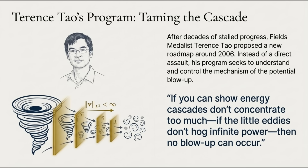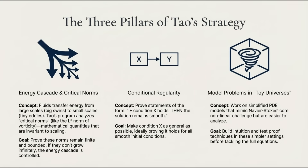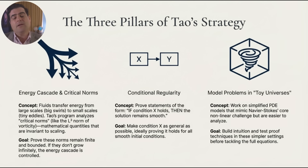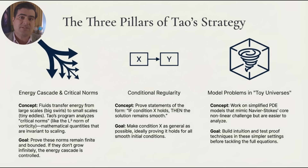We are balancing on the knife edge between stability and chaos. To solve the real problem, Tao developed a roadmap focused on what's called the energy cascade phenomenon. In turbulence, energy moves — it transfers from large scales like big swirls in a river down to smaller scales and then even smaller scales, eventually ending up in tiny, almost microscopic eddies. Usually, the viscosity kills the energy at the bottom. But the danger zone is if this cascade happens too fast. If the energy concentrates into an infinitely small point faster than friction can dissipate it, you get a blow-up, a singularity.